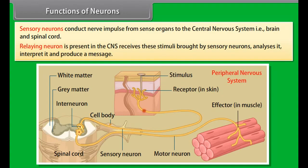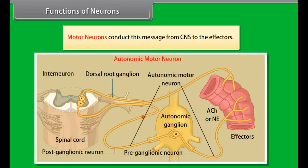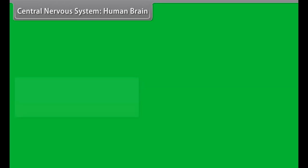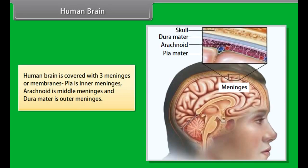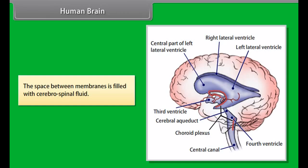On the basis of their functions, neurons are of three types: sensory neurons, association/relaying neurons, and motor neurons. Sensory neurons are found in sense organs. Relaying neurons and motor neurons are found in the brain and spinal cord. Sensory neurons conduct nerve impulses from sense organs to the central nervous system. Relaying neurons, present in the CNS, receive stimuli from sensory neurons, analyze and interpret them, and produce a message. Motor neurons conduct this message from the CNS to the effectors.